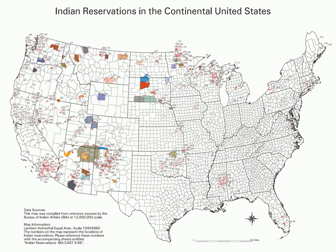Today a majority of Native Americans and Alaska Natives live somewhere other than the reservations, often in larger western cities such as Phoenix and Los Angeles. In 2012, there were over 2.5 million Native Americans with about 1 million living on reservations.